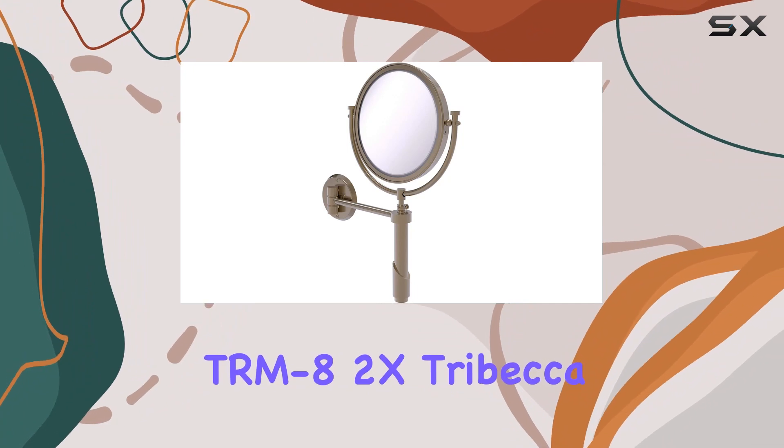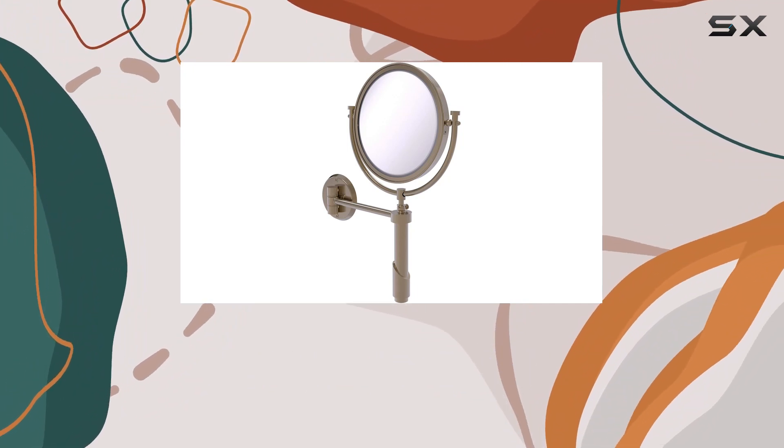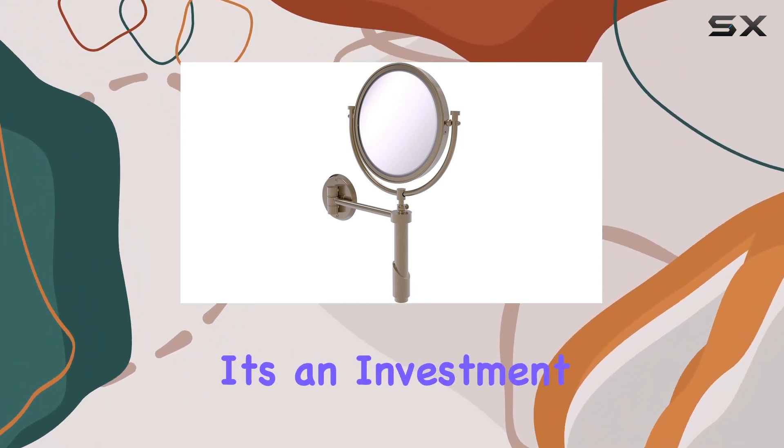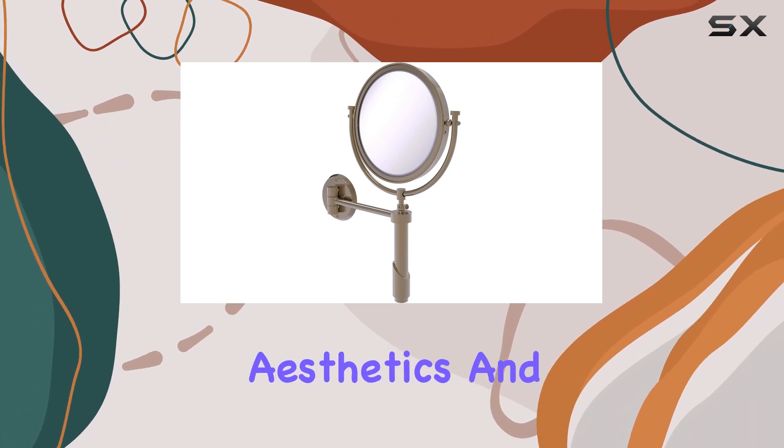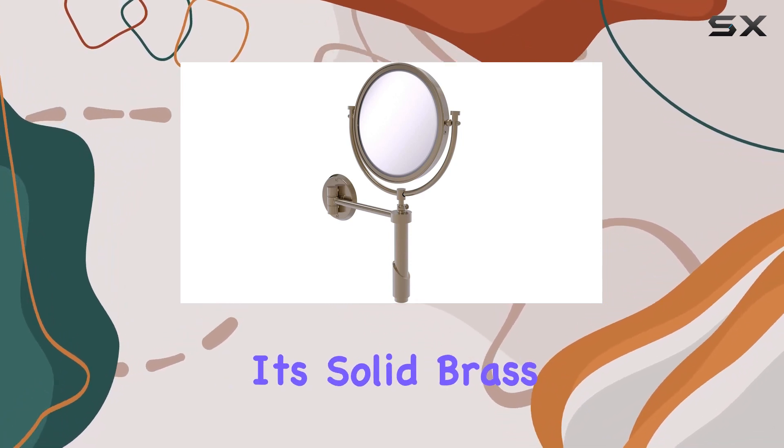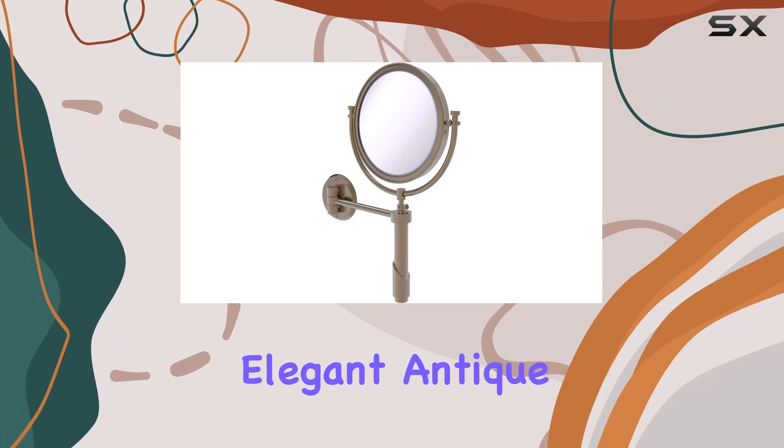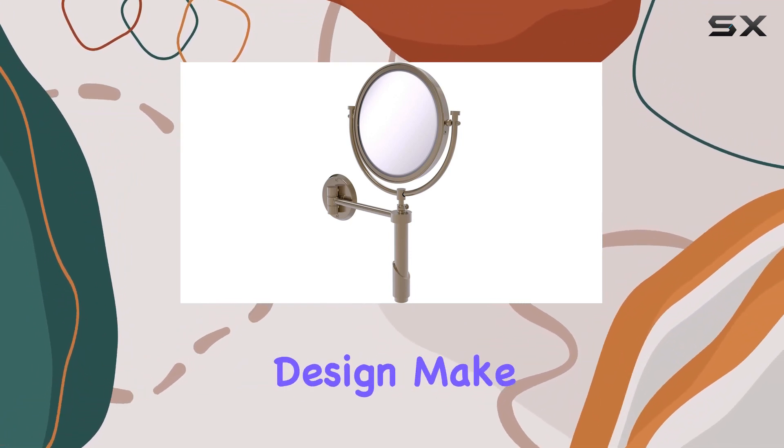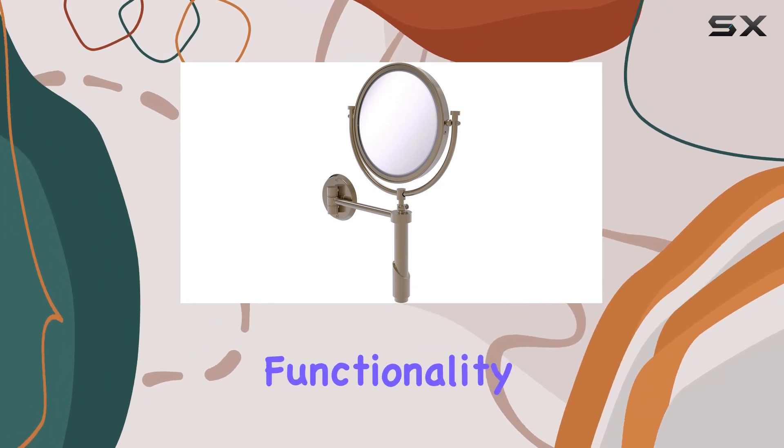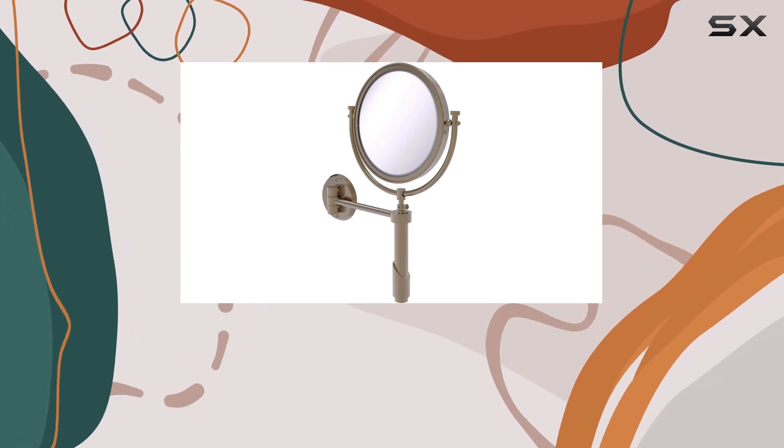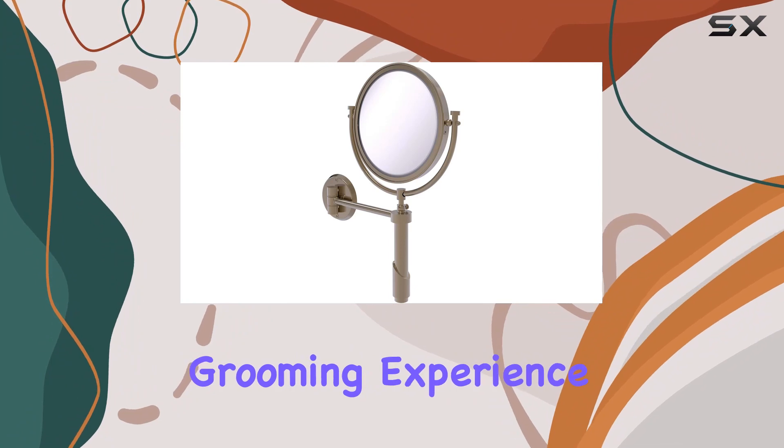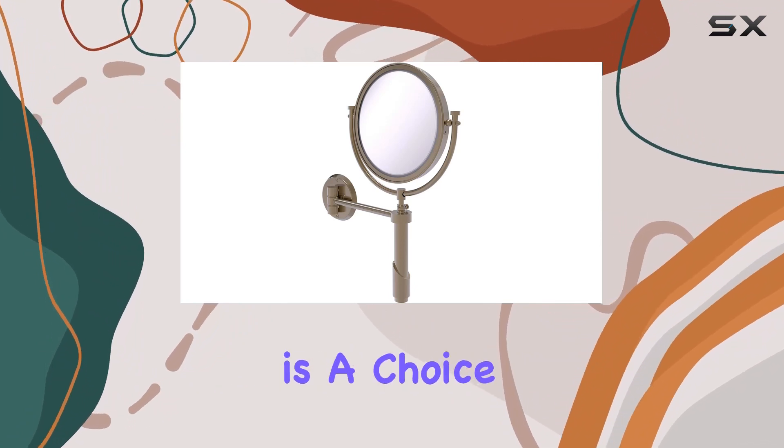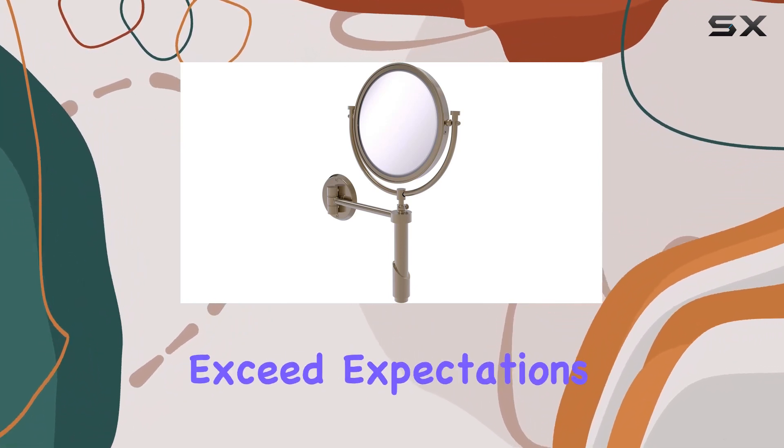In conclusion, the Allied Brass TRMA2X Tribeca Collection Makeup Mirror is more than just a functional tool, it's an investment in your bathroom's aesthetics and your daily routine. Its solid brass construction, elegant antique pewter finish, practical magnification feature, and space-saving design make it an unbeatable combination of style and functionality. Whether you're renovating your bathroom or simply looking to upgrade your grooming experience, this mirror is a choice that promises to meet and exceed expectations.